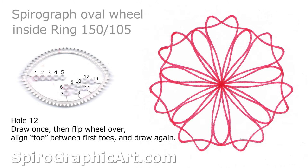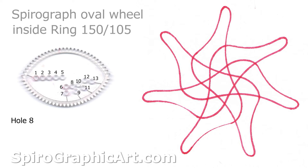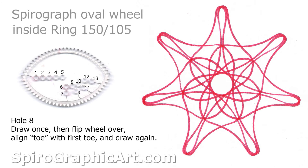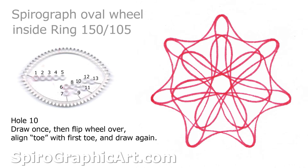So these are all with hole 12 flipped over and drawn again. So you can experiment with that. Here again, hole number 8 produces this design. But if you line up the toes and draw another one with the wheel flipped over, you get something like this. Hole 10 does something like this when you do the same thing. Here's another variation.